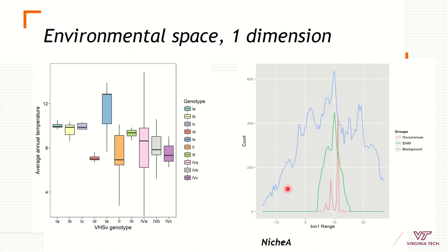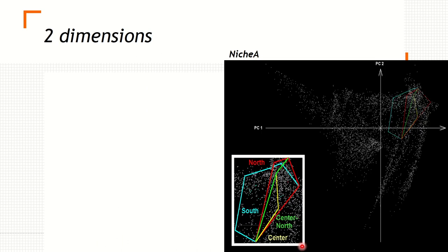These kinds of plots can be done in NicheA software, which is the base of this presentation. This is a model done in two dimensions. We have three species here — one in the center, one in the north center, one in the south, and one in the north — denoted as convex hulls, displayed in the environmental space available for these species.